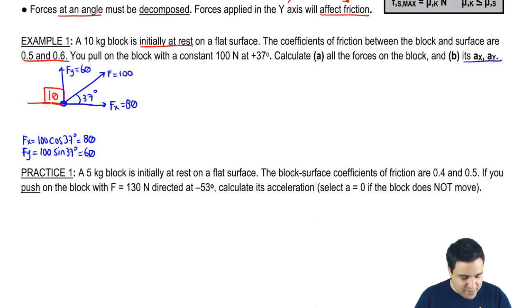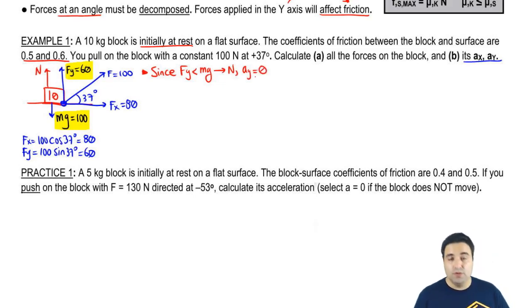What other forces do I have? I have Mg pulling down. Mg will be 10 times 10, so Mg equals 100. And do I have normal force here? I do, because even though I'm pulling the box up with 60, that's not strong enough to lift it from the floor. So I can write since Fy is less than Mg, there is a normal force. And also, not only there's a normal force, but we know now that the acceleration of the y-axis must be zero, because this box isn't getting lifted, it also doesn't break through the ground, right?